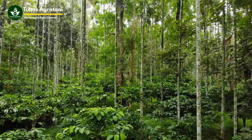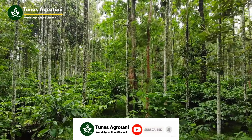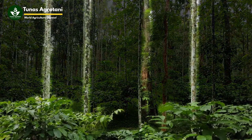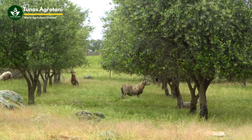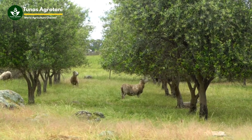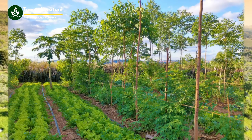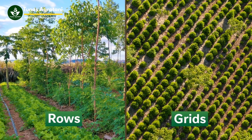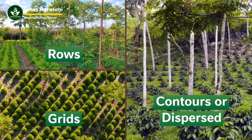The forestry elements can be different types of woody perennials, such as trees and shrubs. Interactions between trees and crops, or livestock, are important at different scales — in fields, on farms, and at landscape level. Trees can be arranged in rows, in grids, as contours, or dispersed randomly.